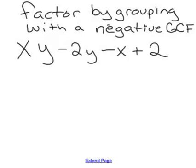Okay, now let's factor this next one by grouping. But it's going to have a little twist at the end. A negative greatest common factor.